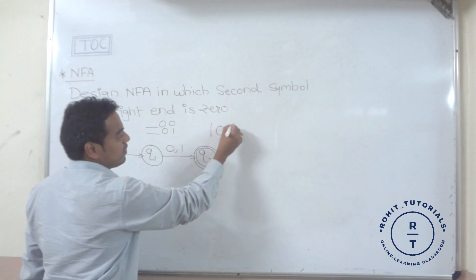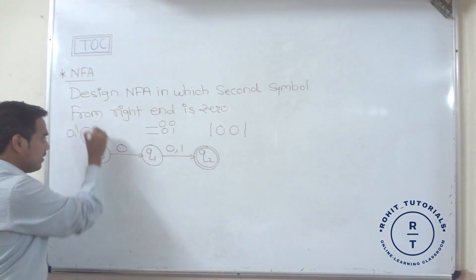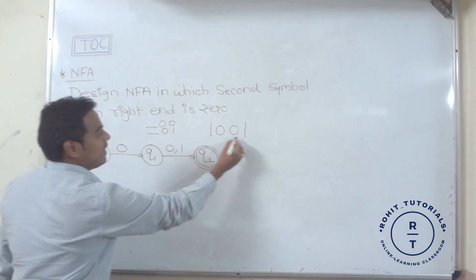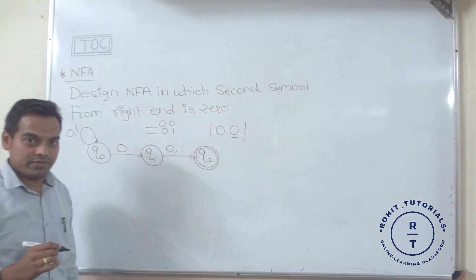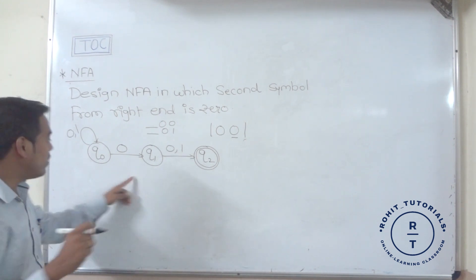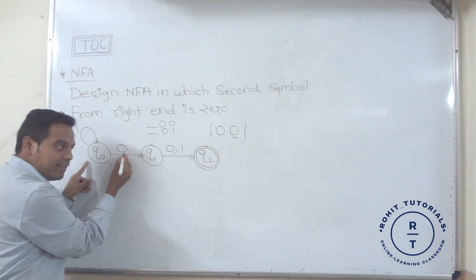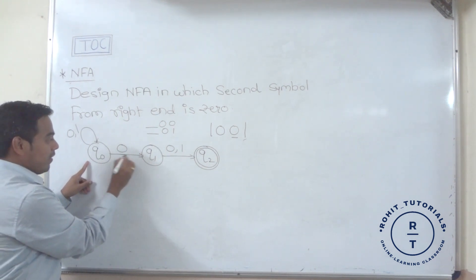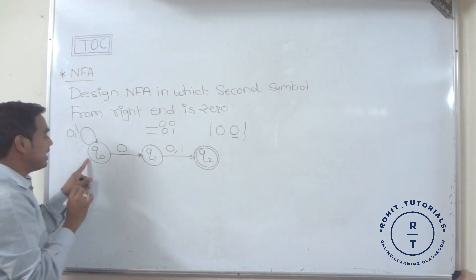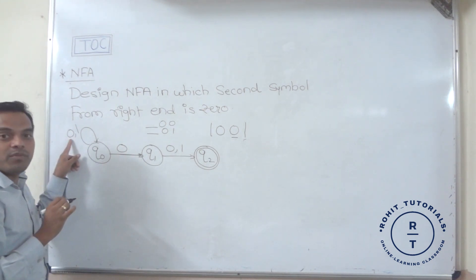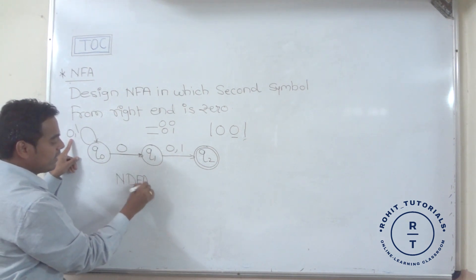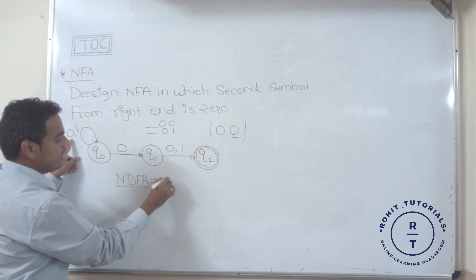For example, if you provide the string '1001': one takes the self-loop, zero takes the self-loop, then zero transitions to q1, and the last one goes to the final state. Note that at q0, for input symbol zero there are two transitions — to q1 and a self-loop at q0. This is why it is called non-deterministic finite automata. So this is the final NFA.